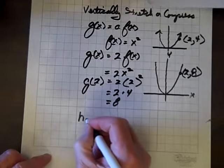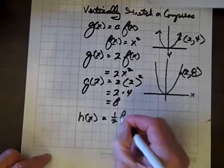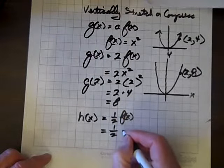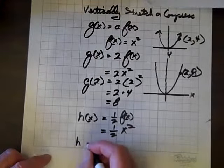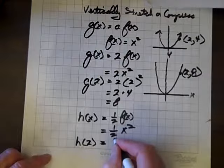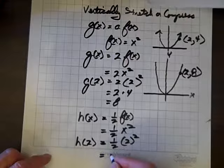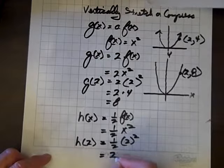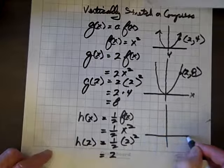Let's try one more. How about this? H of x equals 1 half times f of x. That is equals 1 half x squared. So h of 2 equals 1 half times 2 squared, which equals, if we square 2, we get 4. 1 half of 4 is 2.